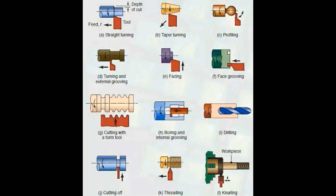We are going to start with the lathe machine's basic operations. We will start with straight turning. The red color mark is the cutting tool, and the gray object is the work piece. In straight turning, the cutting tool moves from right to left across the work piece to produce the exact shape.